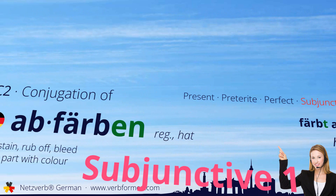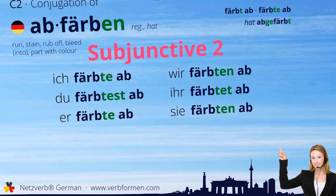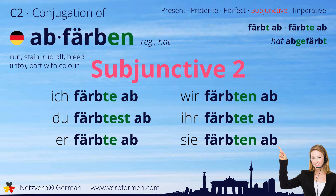Now we move on to the subjunctive two. Ich färbte ab. Du färbtest ab. Er färbte ab. Wir färbten ab. Ihr färbtet ab. Sie färbten ab.